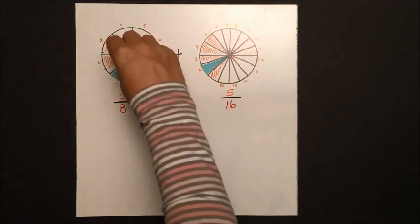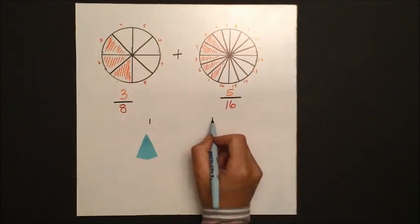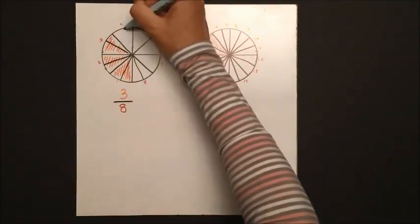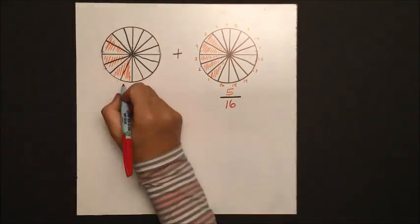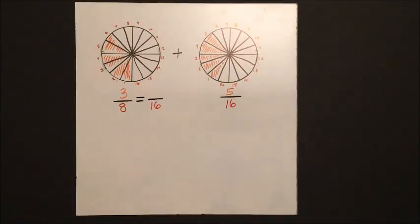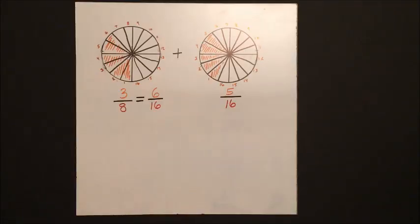Well, again, the two pieces are not the same size, so we can't compare them until they are the same size. Even though they're both one piece, they're not the same. So we're going to cut up our first pizza into smaller pieces so that the total number of possible slices is the same, which is 16.